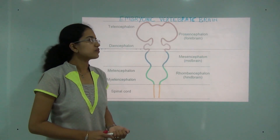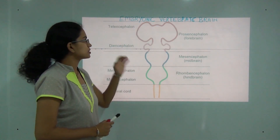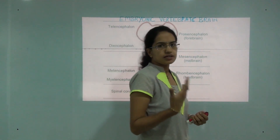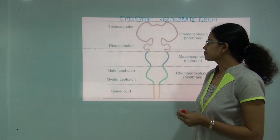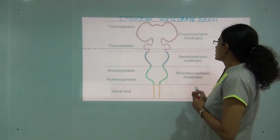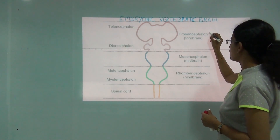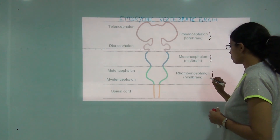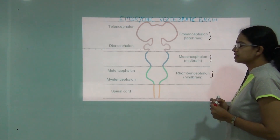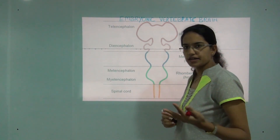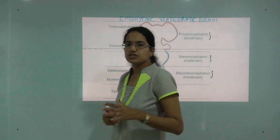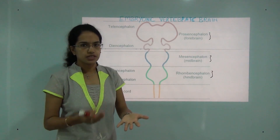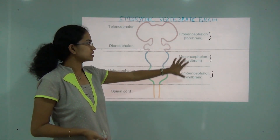Welcome to this class. Today we will be talking about the embryonic vertebrate brain. When we start with the embryonic vertebrate brain, we basically classify it into three parts: prosencephalon, mesencephalon, and rhombencephalon — the forebrain, midbrain, and hindbrain. These parts of the brain develop around five weeks when the embryo is around five weeks.